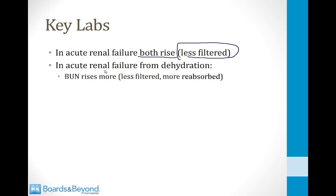However, in acute renal failure from dehydration or poor blood flow — the pre-renal type — the BUN rises much more than the creatinine. That's because less is filtered and more gets reabsorbed in settings of dehydration. The difference in the degree of increase between creatinine and BUN helps identify the cause of renal failure.